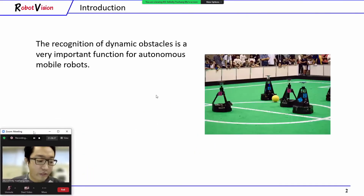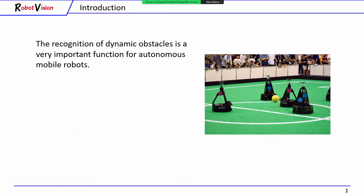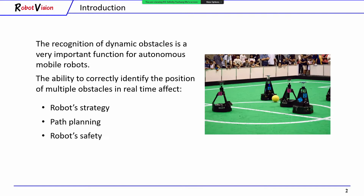The recognition of dynamic obstacles is a very important function for autonomous mobile robots. The ability to correctly identify the position of multiple obstacles in real-time affects the robots' strategy and path planning, and even the robots' safety.